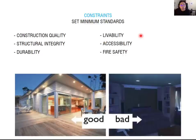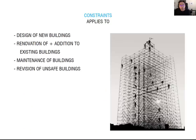We will talk about ADA next year, and we will talk more about fire safety this semester and again next semester and next year. The building code is for setting the minimum standard for your living. How do we apply this building code? Building code applies to new construction, renovation projects, maintenance of the building, and revision of unsafe buildings — it requires every single construction type. You have to meet the minimum requirements from the IBC for designing any type of construction.